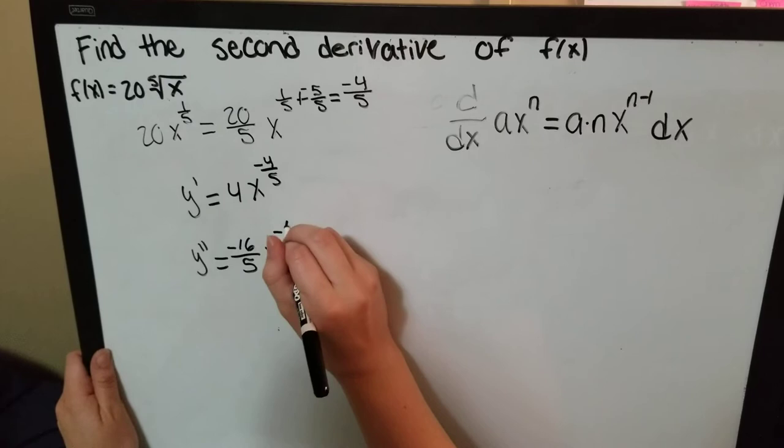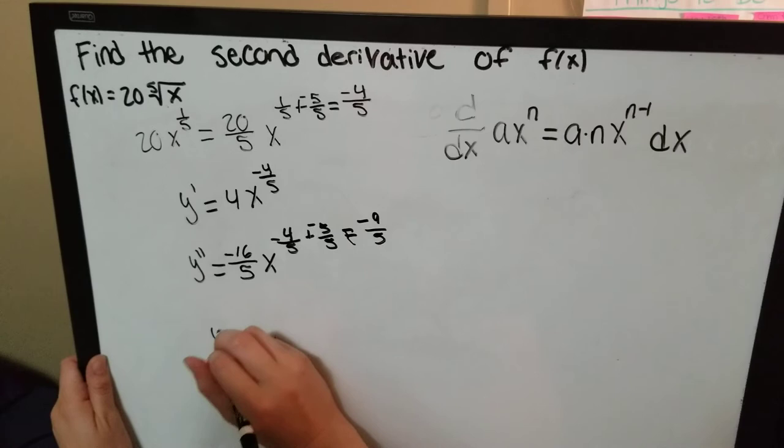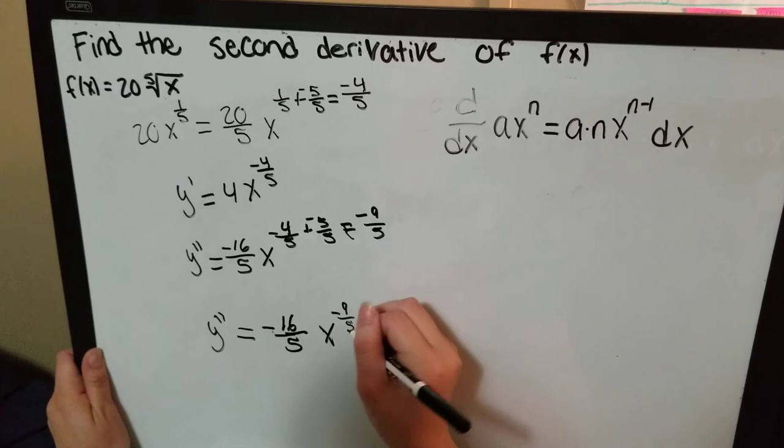Now, subtracting 1 from the power, this now gives us negative 9 fifths. So, the answer for y double prime is negative 16 fifths x to the negative 9 fifths.